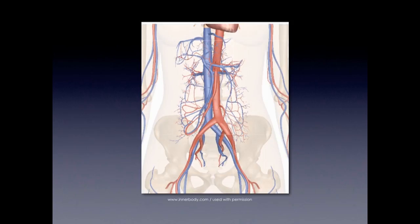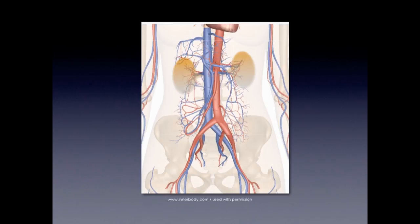We're mainly going to be looking at the abdominal aorta in this region, going from the celiac trunk to the bifurcation, paying specific attention to the infrarenal portion of the aorta, as the majority of aneurysms occur in the infrarenal region.